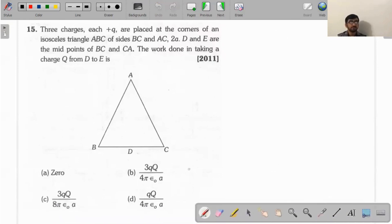Three charges, each +Q, are placed at the corners of an isosceles triangle ABC where sides BC and AC are equal. D and E are the midpoints of BC and CA respectively. The question asks: what is the work done in taking a charge +Q from point D to point E?